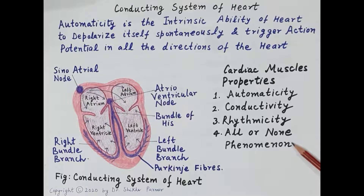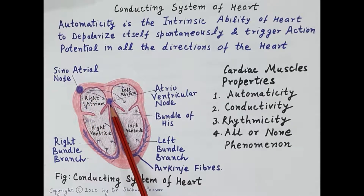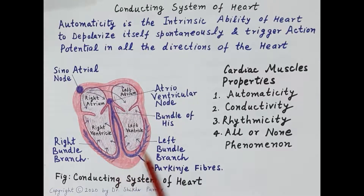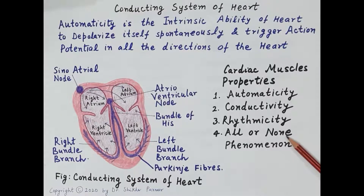The fourth important property is the all-or-none phenomenon. A single impulse generated by the SA node travels to the atrioventricular node and to the apex of the heart, resulting in the coordinated pump activity of the entire heart. Either the impulse generated will cause the entire heart to contract and produce a complete response, or there will be no response and no pumping of the heart. This property — that either the heart contracts as a unit or does not contract at all — is termed the all-or-none phenomenon.